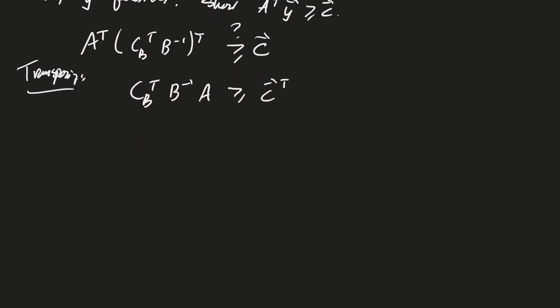That looks familiar. In fact, what this is saying is that minus c transpose plus c_B transpose B inverse A is greater than or equal to 0. Have we seen that before? This is the optimal row 0. And so that is true. Therefore, if you actually wanted to write this up nicely as a proof, you would start here with your optimal row 0 and work your way backwards. And then because this is true, we get that y is feasible. This is kind of our scratch work.